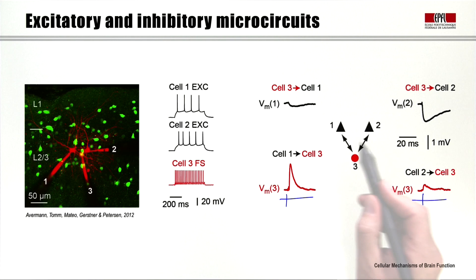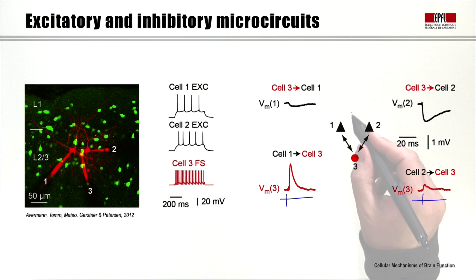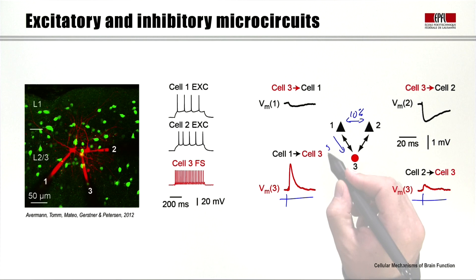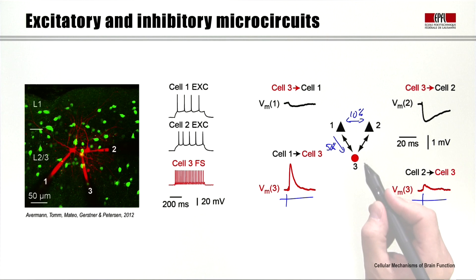This type of connectivity is entirely typical. We saw that excitatory neurons in the neocortex connect to each other with something like a 10% connection probability. On average, excitatory neurons and fast-spiking GABAergic neurons connect with something like 50% probability. So the connectivity of excitatory neurons is much higher onto these parvalbumin-expressing GABAergic neurons than it is onto other excitatory neurons.